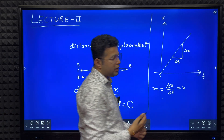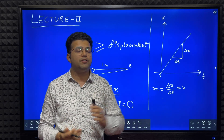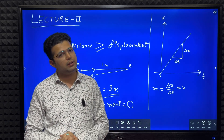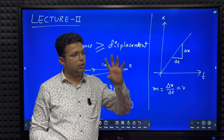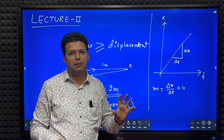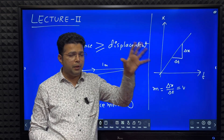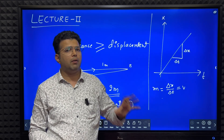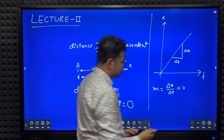Then we studied the unit of acceleration. What is acceleration? Rate of change of velocity is acceleration. Acceleration equals velocity divided by time, so its unit will be meter per second divided by second, which is meter per second square.